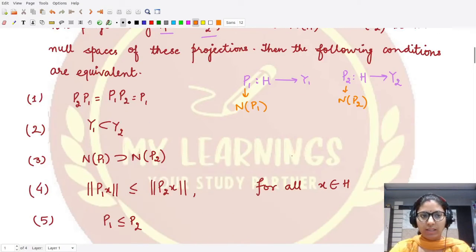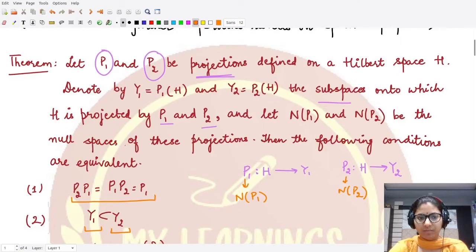We have a commutation of this kind, so that P₂P₁ is equal to P₁P₂ and further they are equal to P₁. And for that we have Y₁ contained in Y₂, this is the result. The third statement tells that the null space N(P₁) is containing the null space N(P₂).